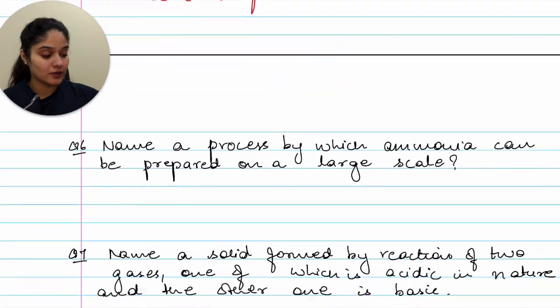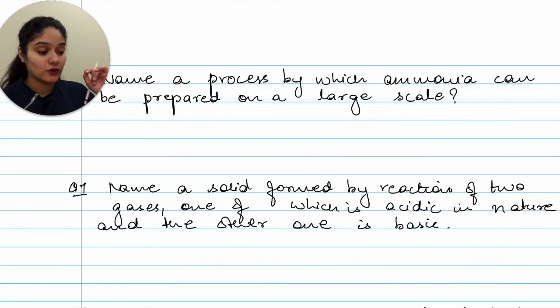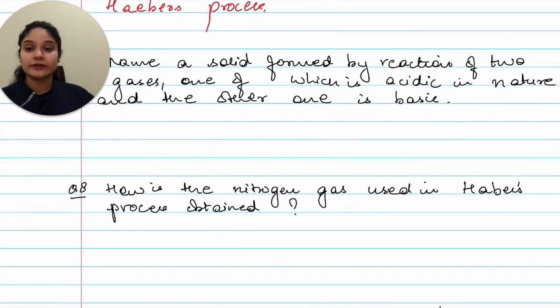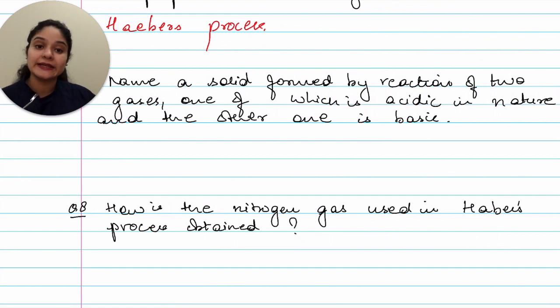Moving on to question sixth. Name a process by which ammonia gas can be prepared on a large scale. The answer is Haber's process. Next, question seventh. Name a solid formed by reaction of two gases, one of which is acidic in nature and the other one is basic. That would be ammonium chloride, NH4Cl.